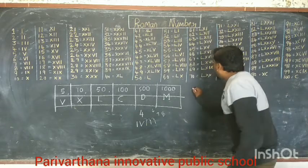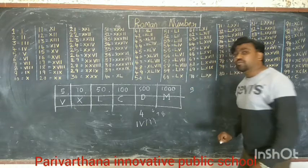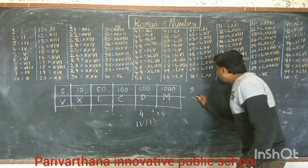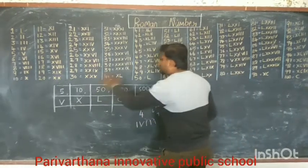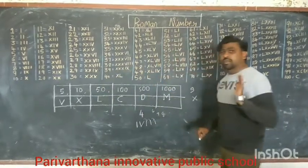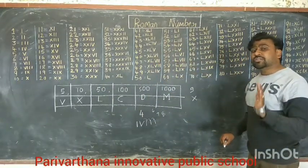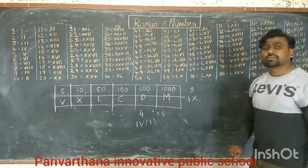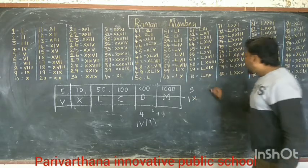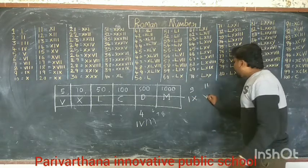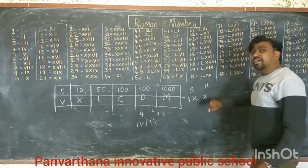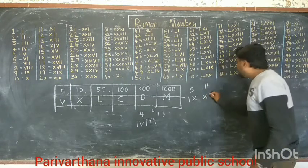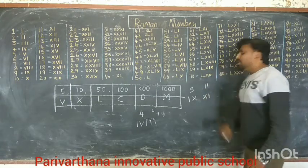Now let's look at 9. How can we write 9? X means 10. How to write 9? We have to subtract 1, so that means 9. We can write 11: X plus 1 — that is 11.